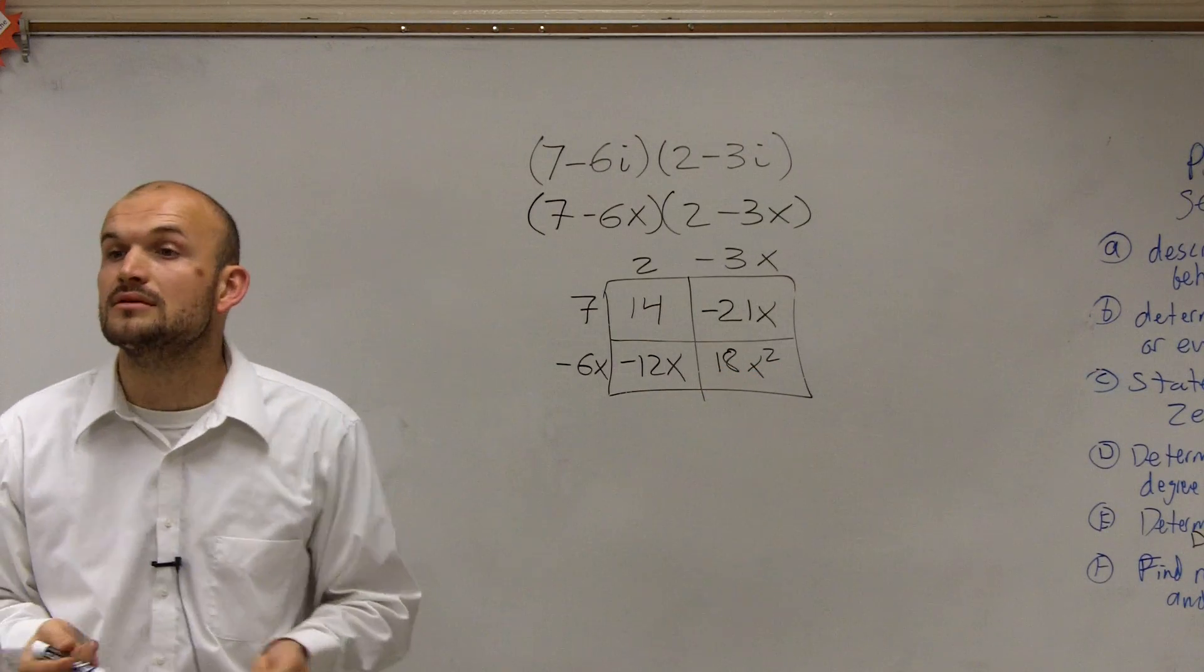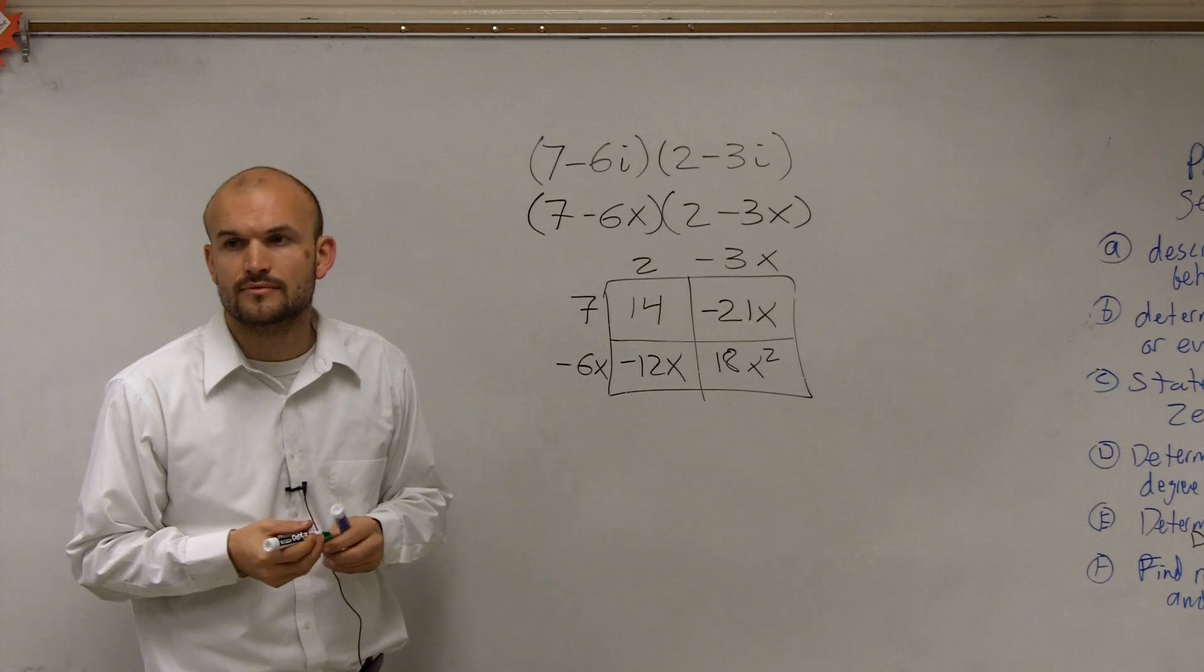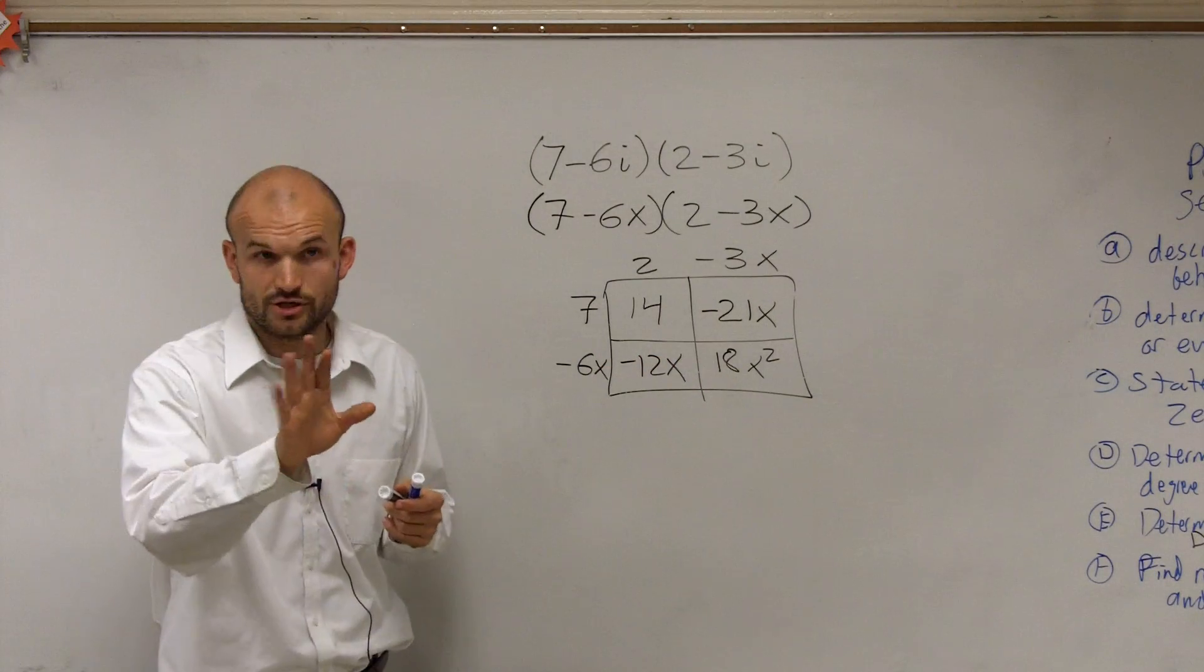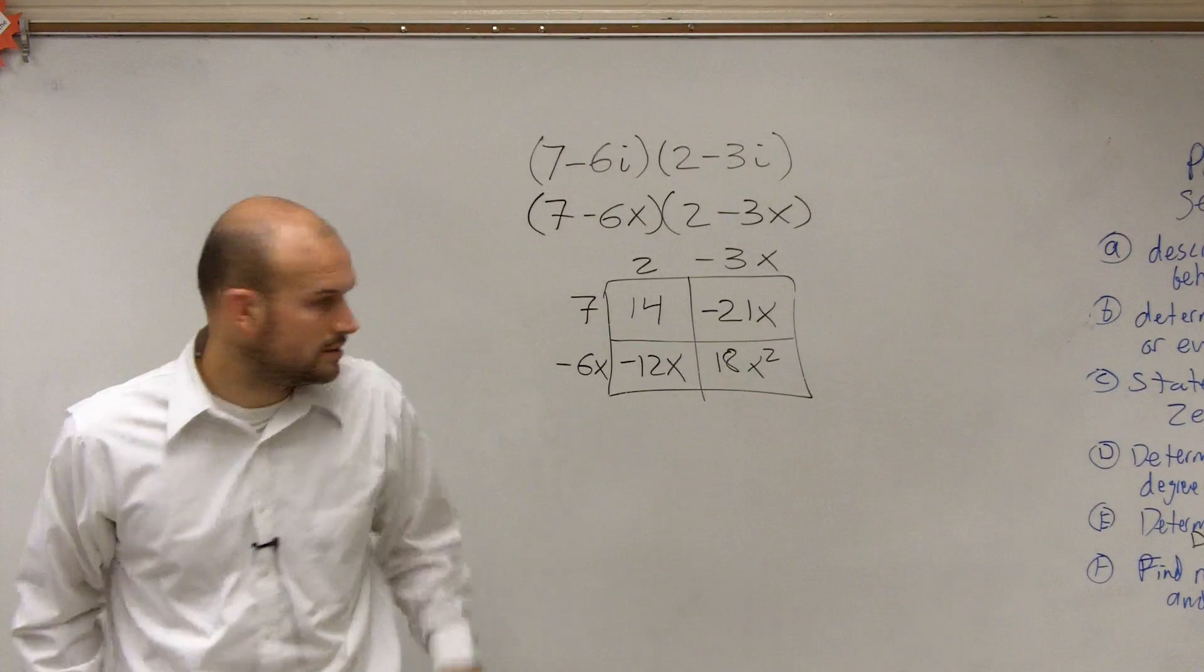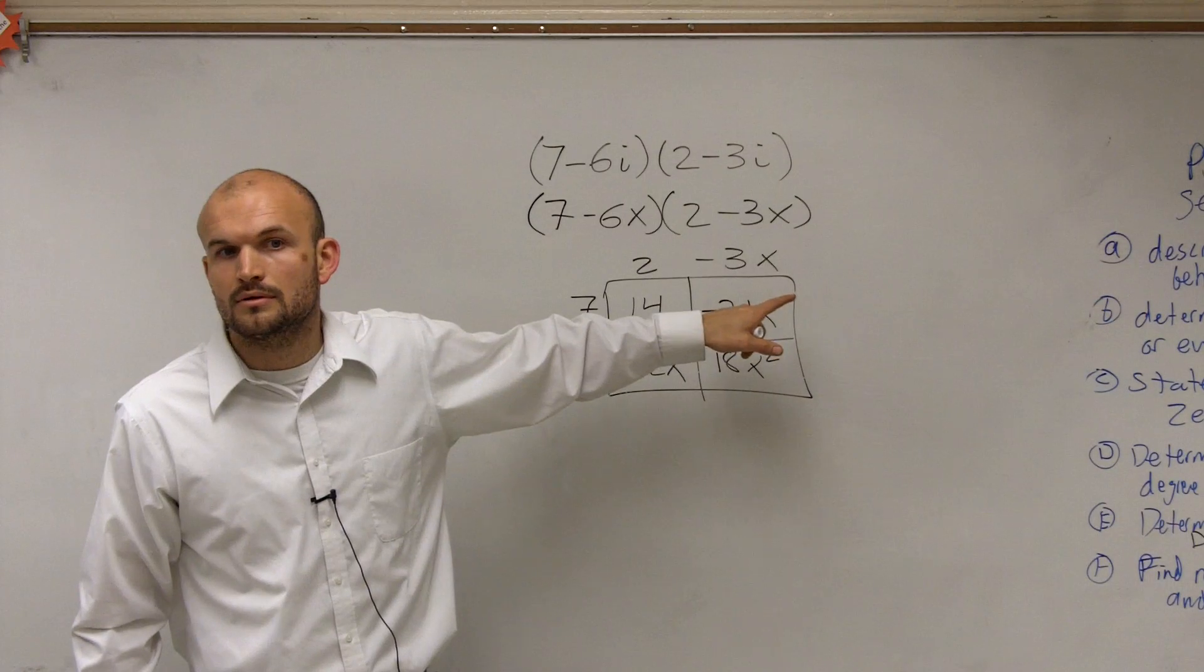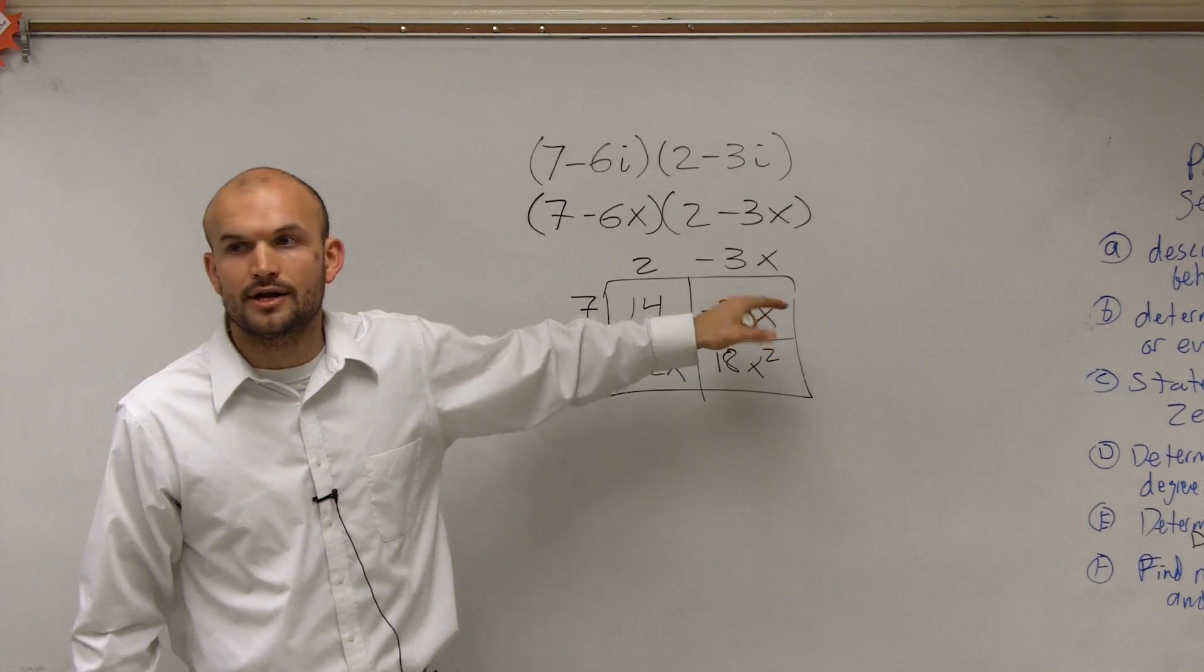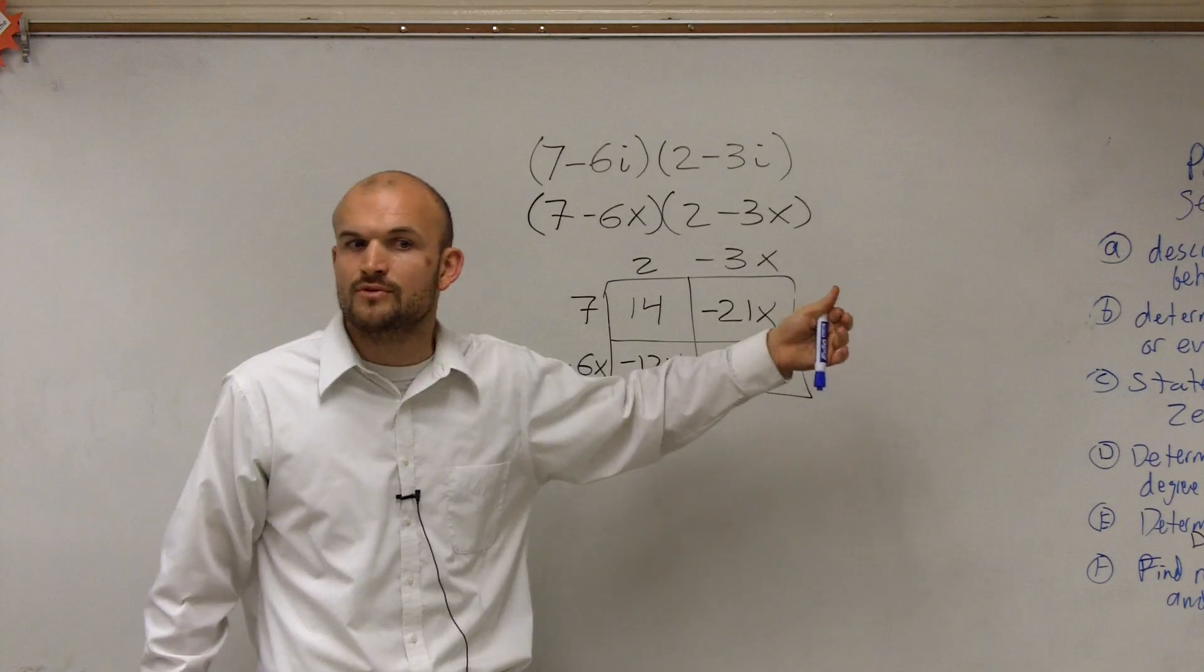And the cool thing about, yes, positive 18x squared. Let's see, where is the i? OK, I'm just going to go back with the i in just a second. x times x is x squared. Right? A number multiplied by itself is going to be squared. So it would be x times x equals x squared.